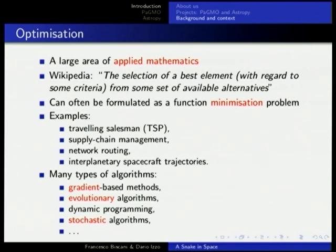Other classical applications include supply chain management and network routing. What most concerns PAGMO is interplanetary spacecraft trajectories. Once you have defined your optimization problem, there are many different algorithms you can apply — gradient-based methods, evolutionary algorithms, dynamic programming, stochastic algorithms, and so on. There is a huge amount of literature on this topic. The field of optimization was formally defined around the time of the Second World War, when it was introduced to solve logistics problems.